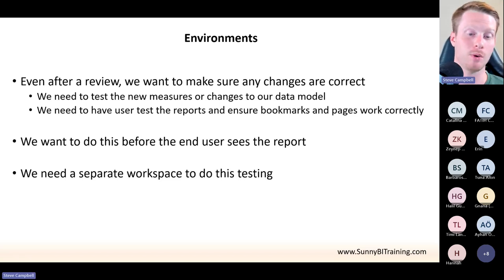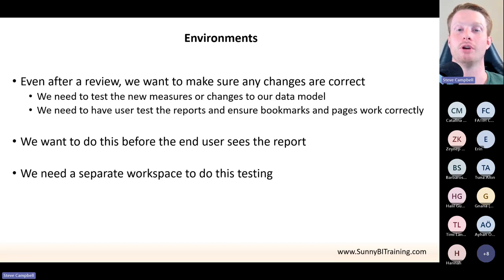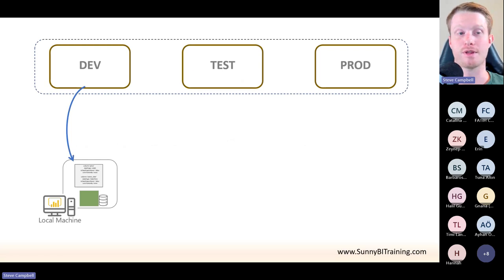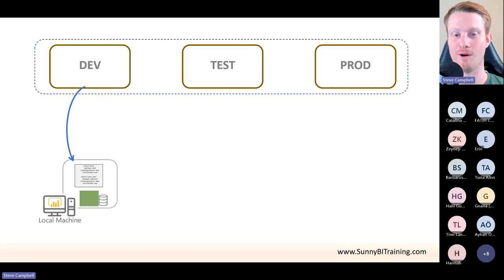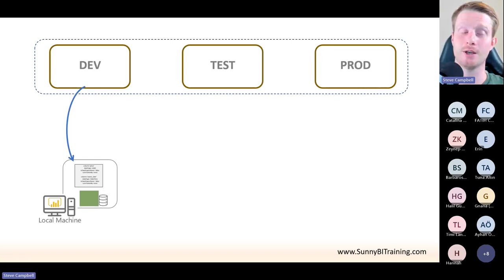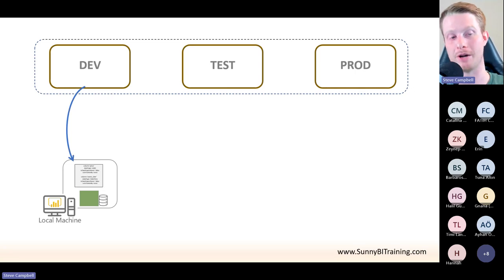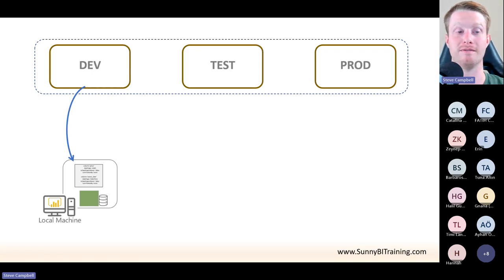We want to do this before the end user sees a report. We don't want to release it to everyone and then people say this is wrong. So what we do is create a separate workspace. In Power BI, we can think of environments as workspaces. Typically we'll have at least three workspaces — these are the three environments. With the release this month of some stuff in deployment pipelines, you can actually have up to 10 now. But typically you'll see three workspaces. The first workspace we'll call development — this is the first environment. This is where we do all of Git.